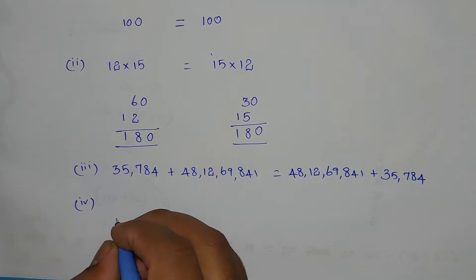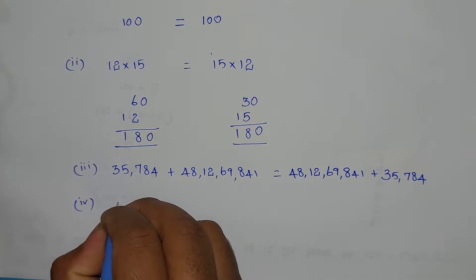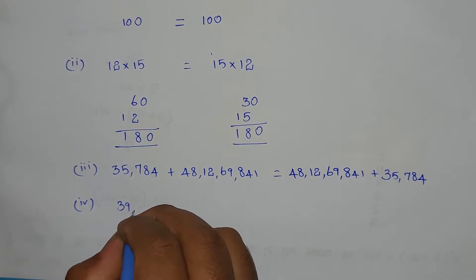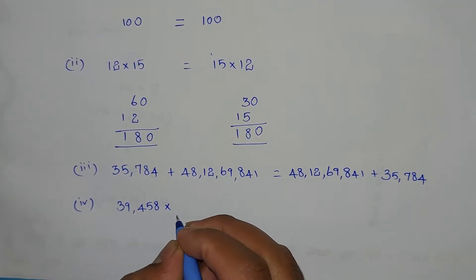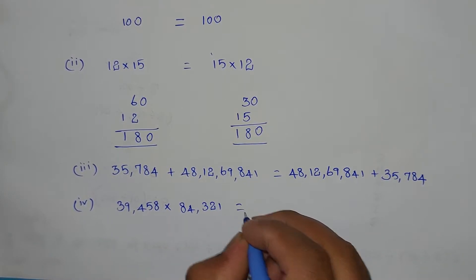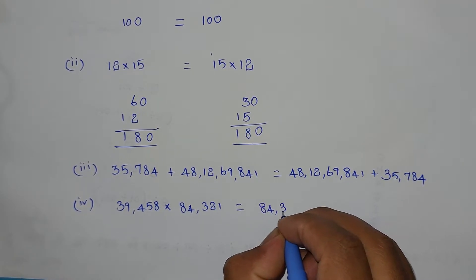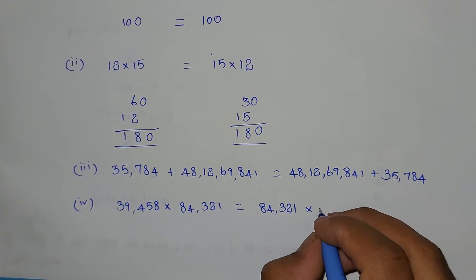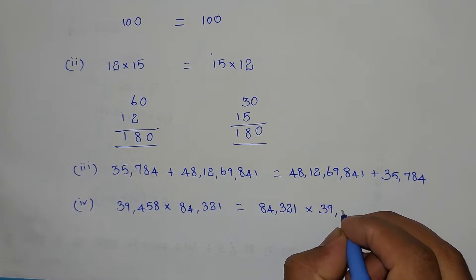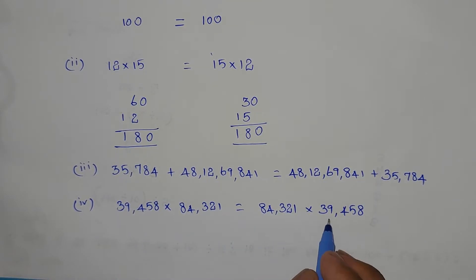Problem 4 — multiplication with large numbers. 39,458 into 84,321 equals 84,321 into 39,458. Even with large numbers, when we change the order in multiplication, the final answer remains the same. This confirms commutativity in multiplication as well.